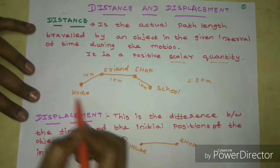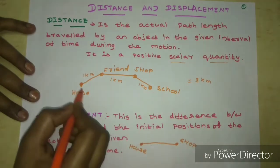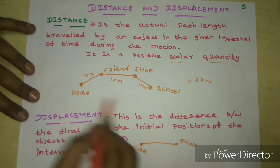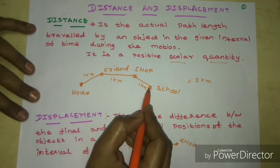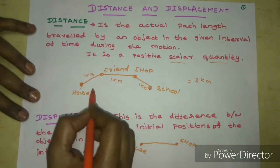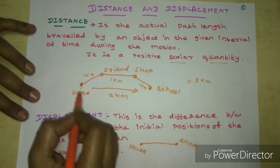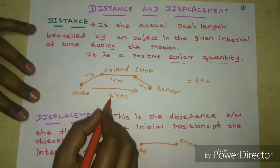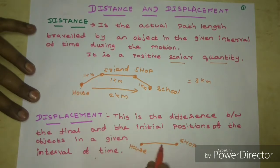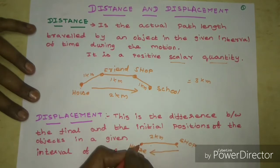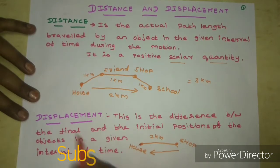The third key point: distance is a scalar quantity — it doesn't depend on direction, only the total path traveled. Displacement is a vector quantity. If you go to a shop and return to the starting point, the final position equals the initial position, so when you subtract, displacement is zero.